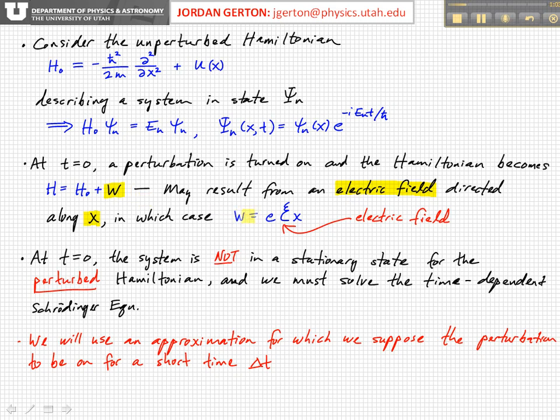And so in the case of an electric field applied along the x direction, we would have that W, the perturbation part of the Hamiltonian, is equal to the elementary charge e, if we're applying this to a charge, an electron.